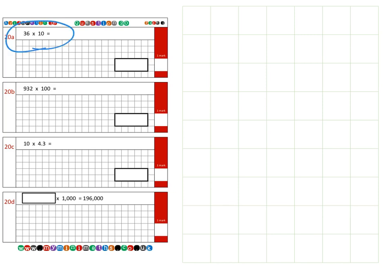First, we move on to question 20a, which is 36 multiplied by 10. If we take the 36 and multiply it by a single 10, that's one space bigger. We take our 3 into the hundreds column.